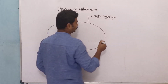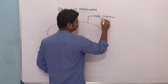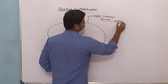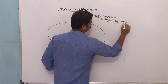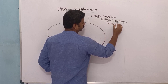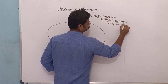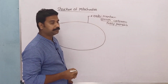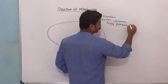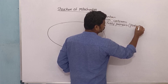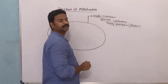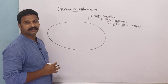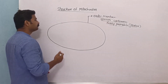The outer membrane of mitochondria is smooth, continuous, and freely permeable. Remember this MCQ: the outer membrane is freely permeable due to the presence of protein channels called porins. Due to the presence of porins, the outer membrane of mitochondria is freely permeable, just like the bacterial cell.